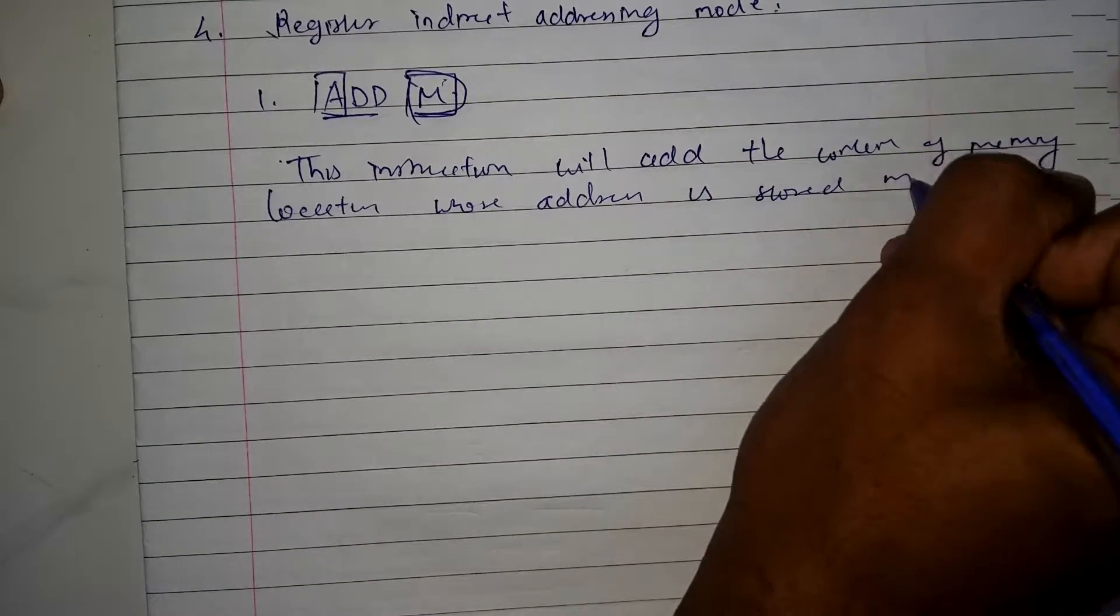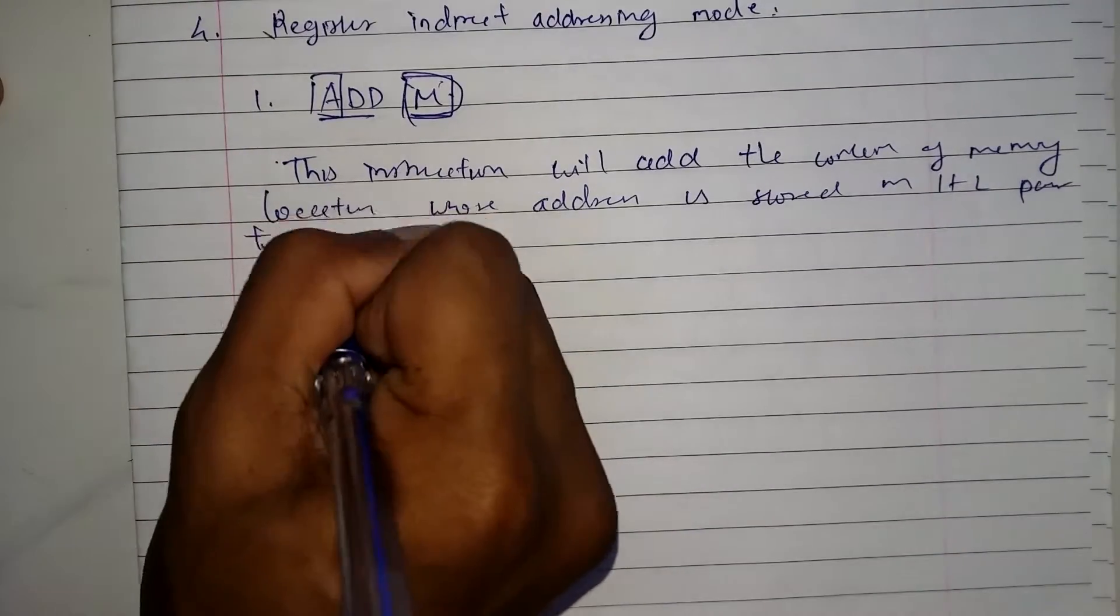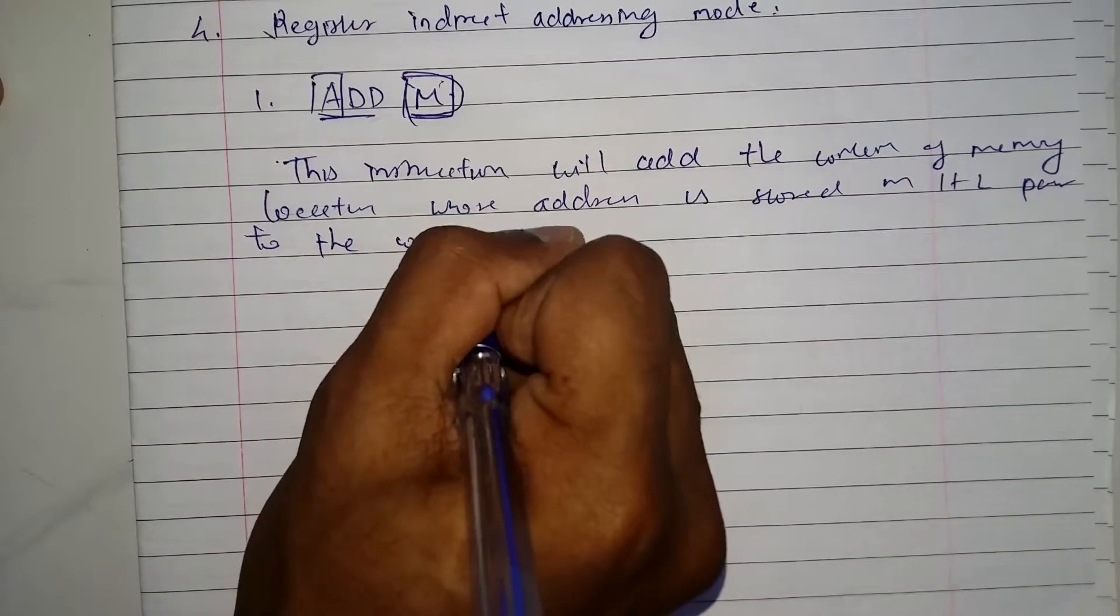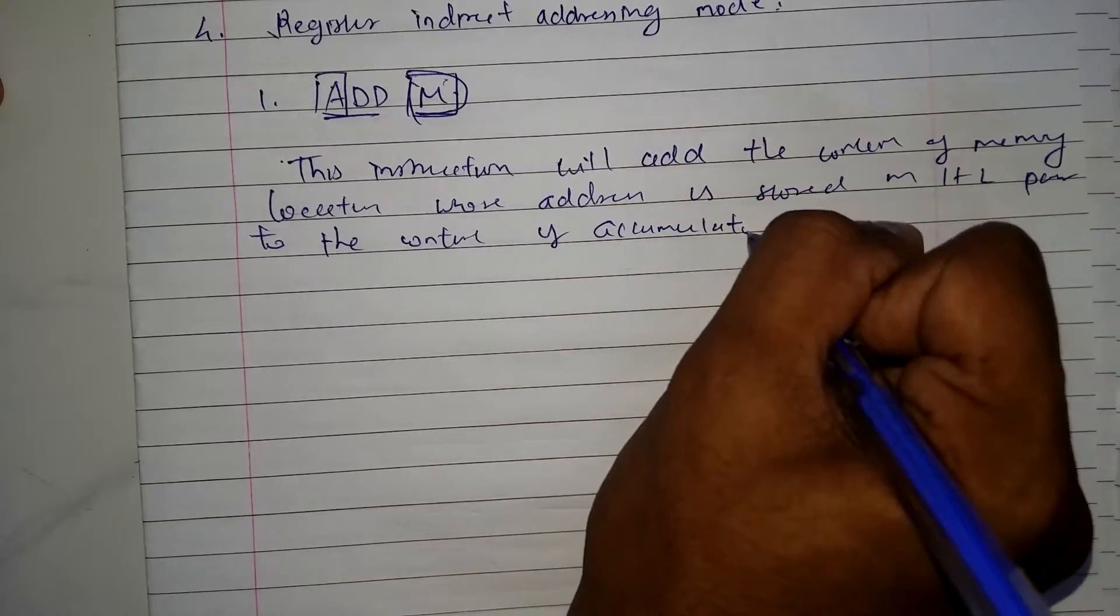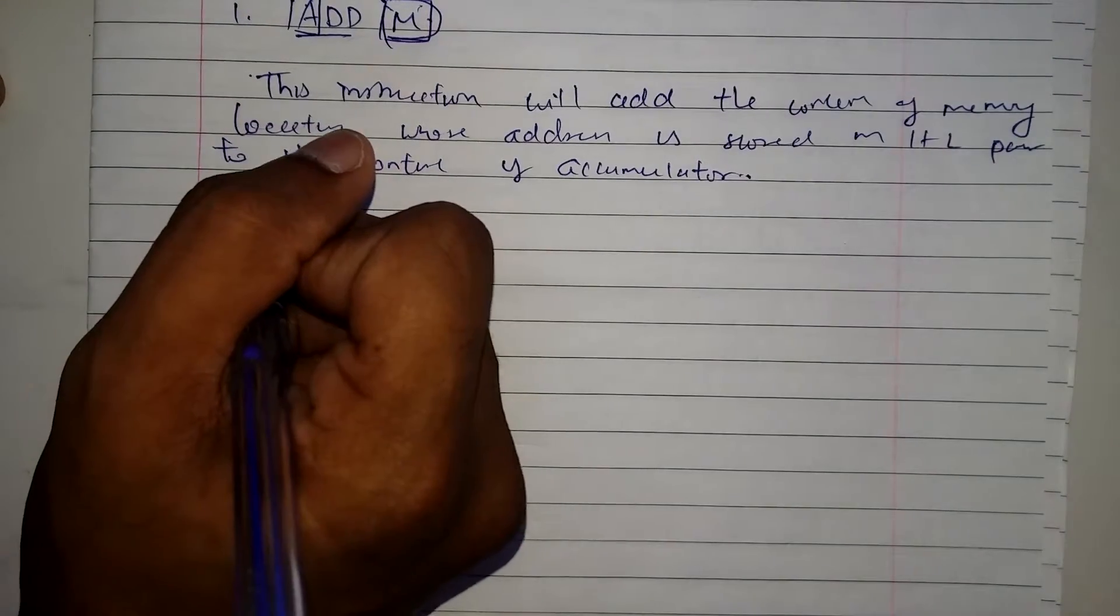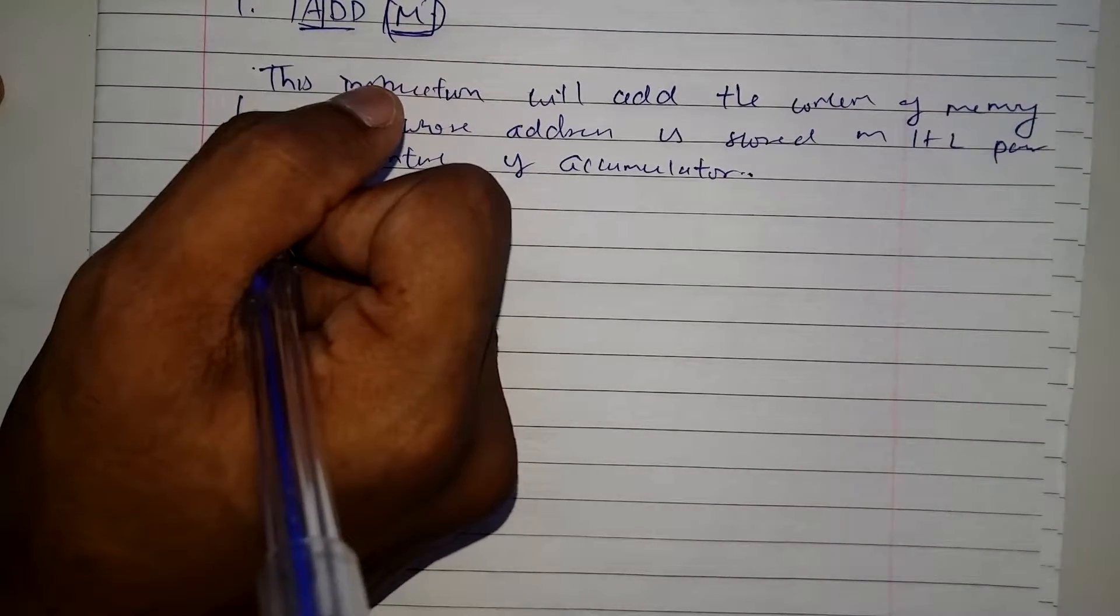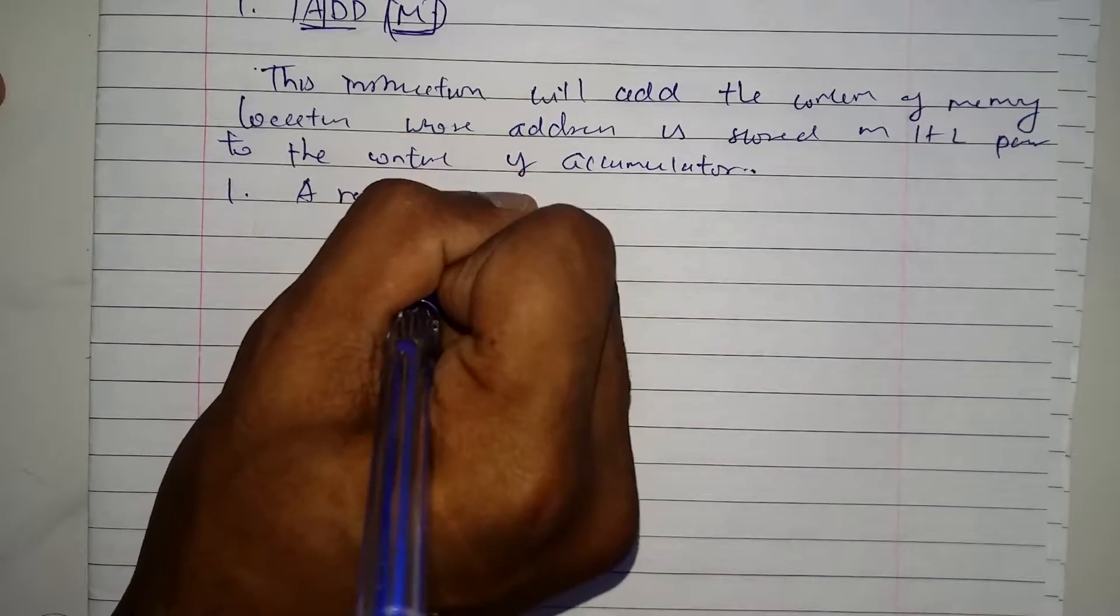And of course the answer will be stored in the accumulator. Now the first one that I'd like to mention here, that a register pair, most of the time HL pair, is specified for addressing.